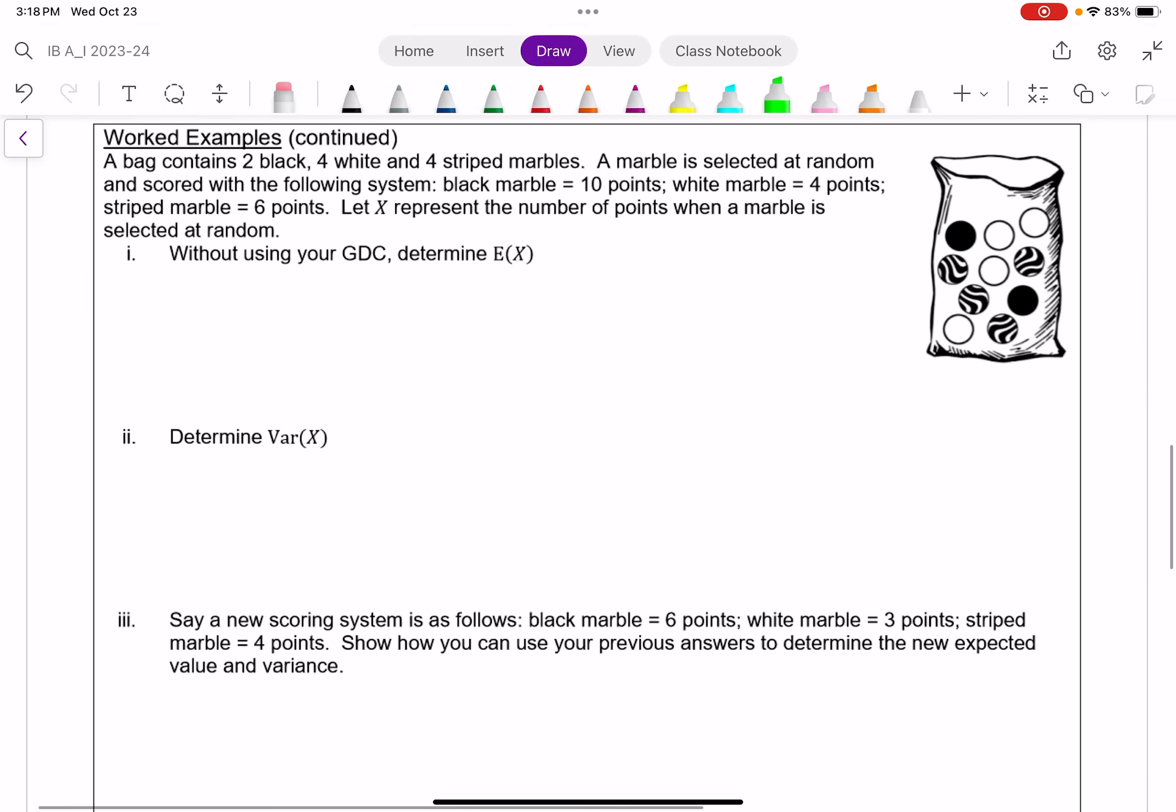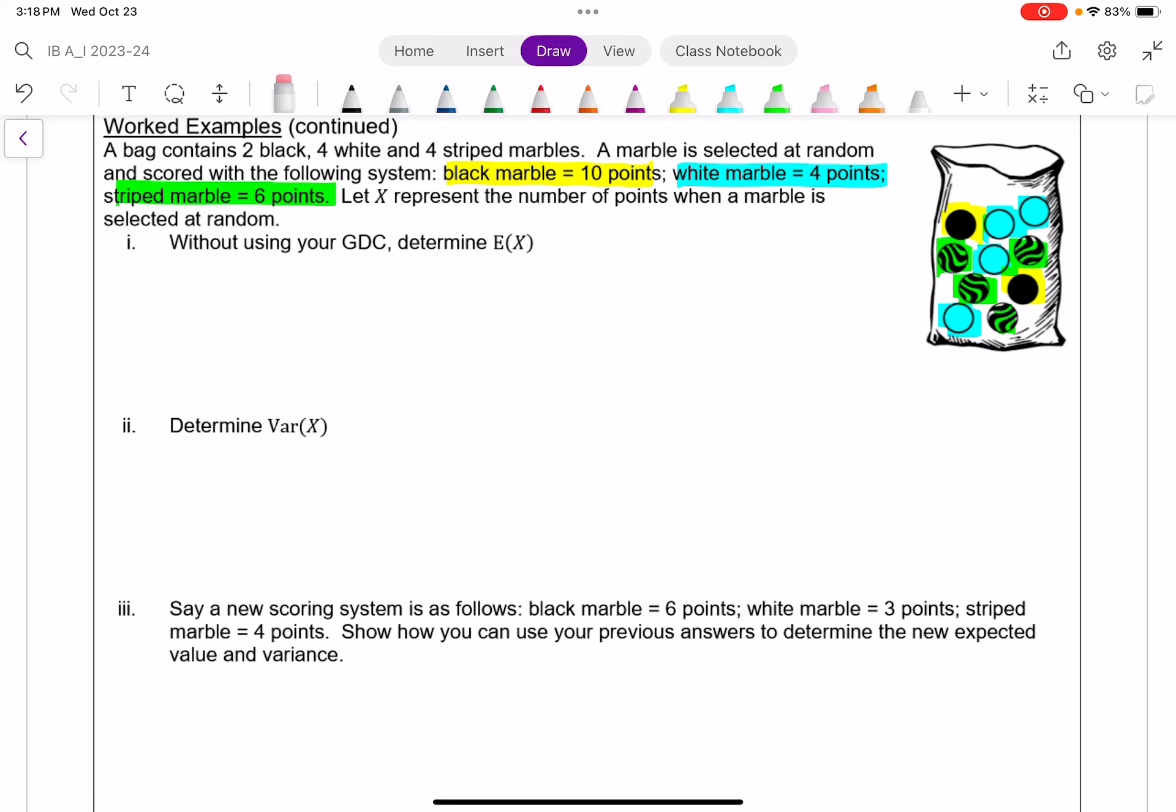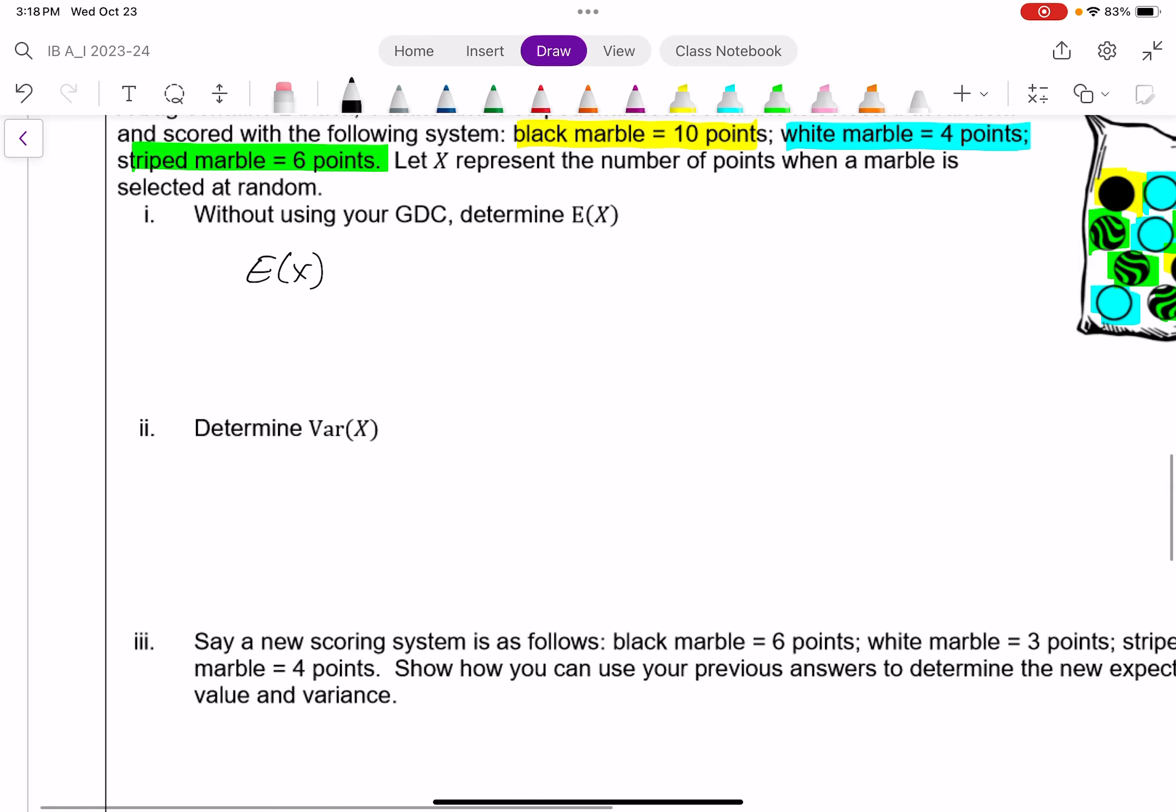So let's get a little less abstract, but also a little bit more work to think about. I have this bag of marbles, 10 marbles. There's white marbles, black marbles, and striped marbles. We're attaching points to each of these. If you select a black marble, that's 10 points. If you select a white marble, that's 4 points. And if you select a striped marble, that's 6 points. First, without using our GDC, to remember how we find expected values, what's the expected value? The expected value in general is the sum of all our outcomes times the probability of that outcome occurring.